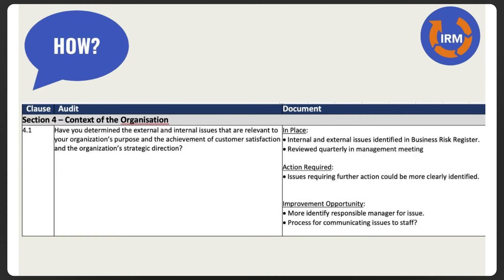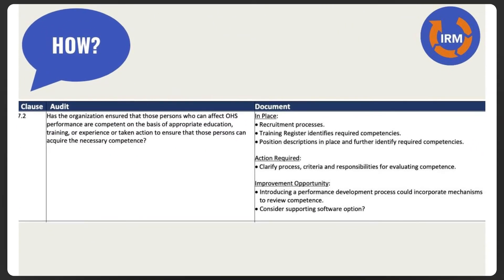Immediately we're also starting to think about how we could improve this process. We're going to go through a second example and discuss why those three elements on the right-hand side are so important. This time we're looking at clause 7.2, which in those different ISO management system standards is around ensuring persons working on our behalf are competent based on education, training, and experience. In this case it's relating to a safety system, but it's a very similar clause in all of those other ISO management system standards.